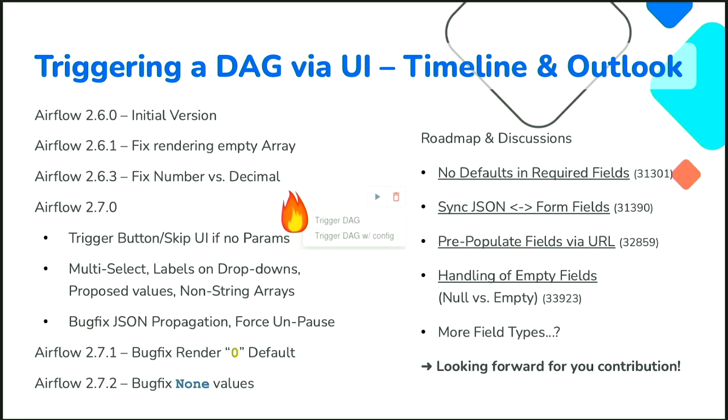One more question: since it's possible to add custom HTML, are there security checks to prevent adding arbitrary JavaScript code into the form? At the moment, the content is trusted — you need to trust your DAG author not to put suspicious JavaScript in it. Sanitizing it is on the to-do list, but it's complex because encoding tricks can bypass naive sanitization. A possible approach is to make the custom HTML feature configurable so you can disable it if you don't trust your DAG authors.